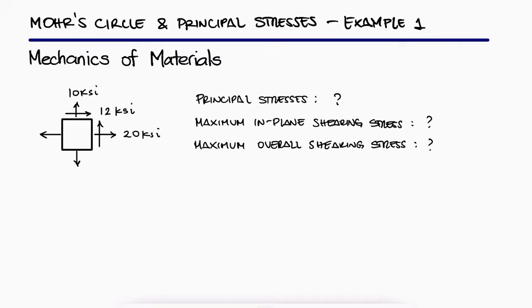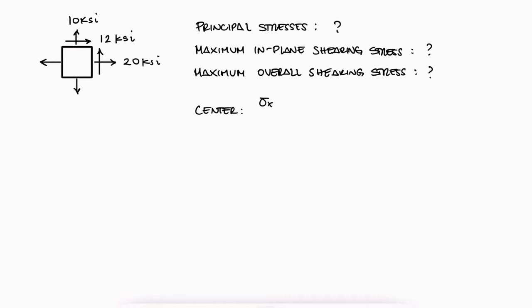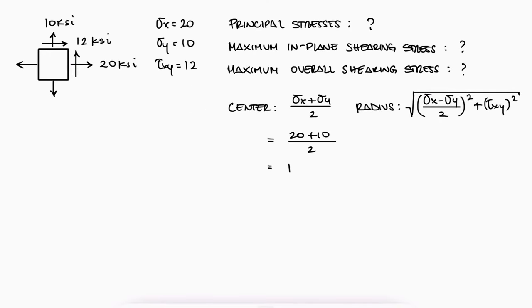This is the first example for the Mohr's circle main video. The link to that main video and other examples are in the description below. By using the two expressions we derived during that main video, we can find the location of the center of the Mohr's circle and its radius.